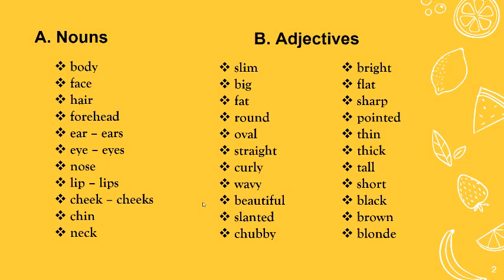My students, before coming to this material, I would like to give you the nouns or adjectives — kata benda atau kata sifat — yang berhubungan dengan gambaran fisik seseorang. We begin with nouns. The nouns are: body, face, hair, forehead, ear (ears), eye (eyes), nose, lip (lips), cheeks, chin, and neck.